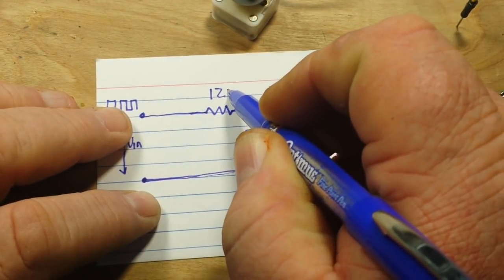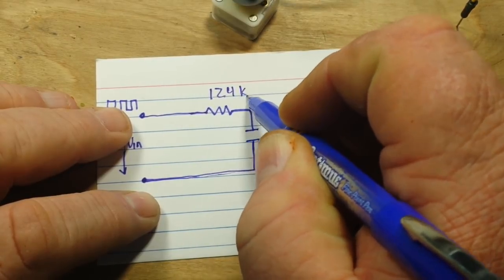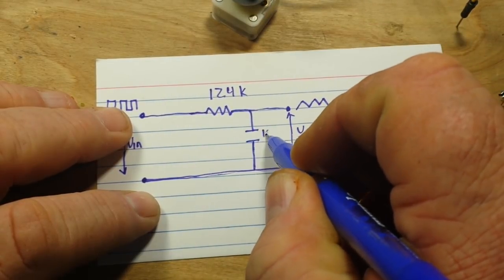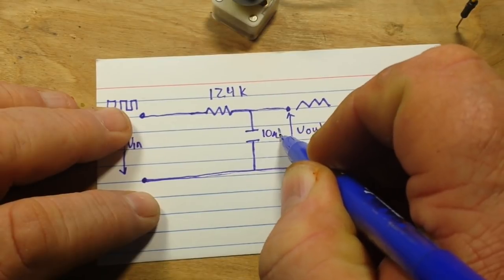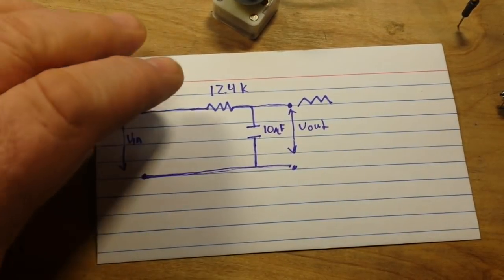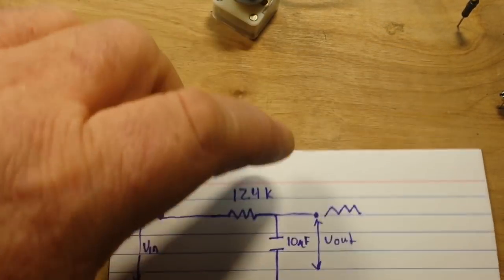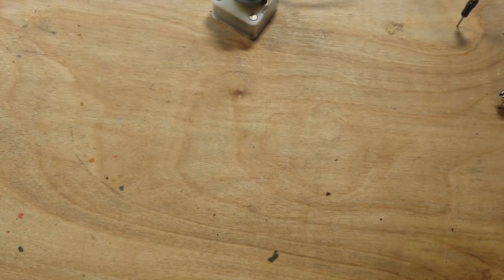Anyway, values. We're going to use, in this case, a 124K resistor and a 10 microfarad capacitor. I won't get into the math of it right now. We're just talking about how to build this circuit.